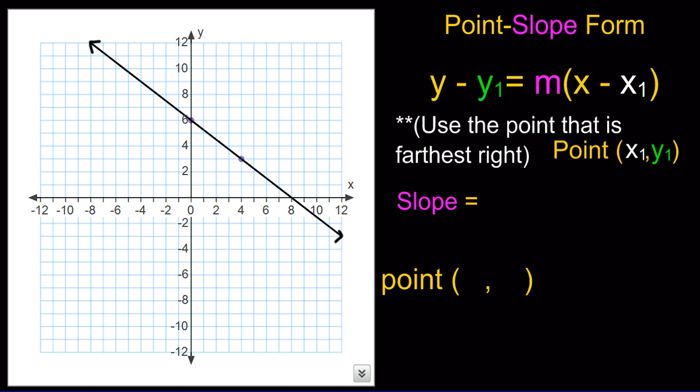And here we go. So once again, we're going to put the point that is farthest to the right, and it's 4 comma 3.